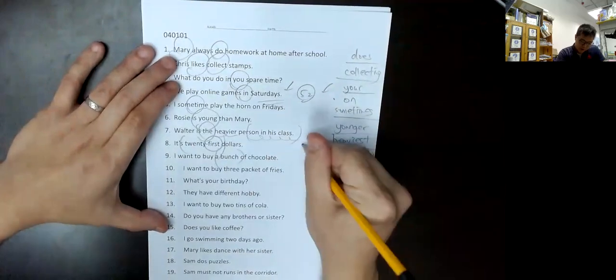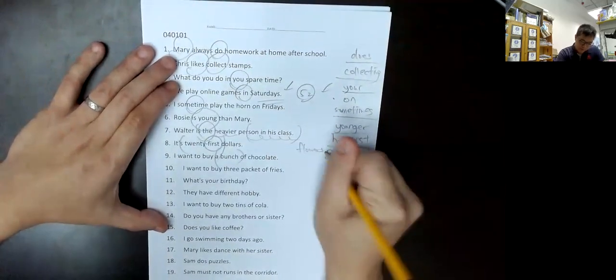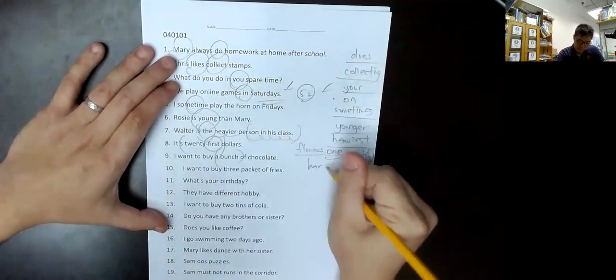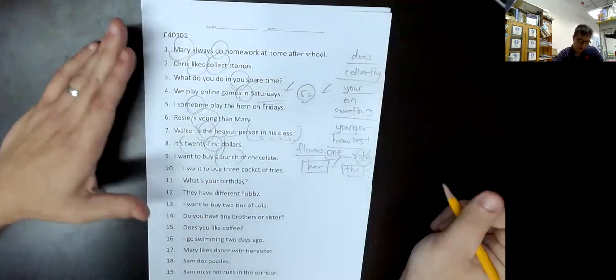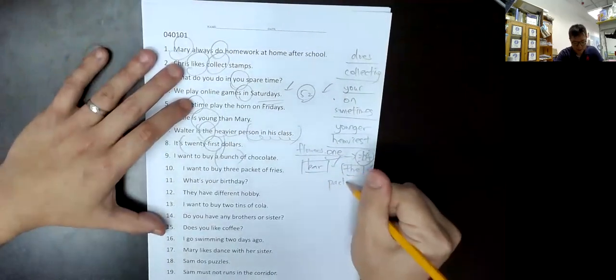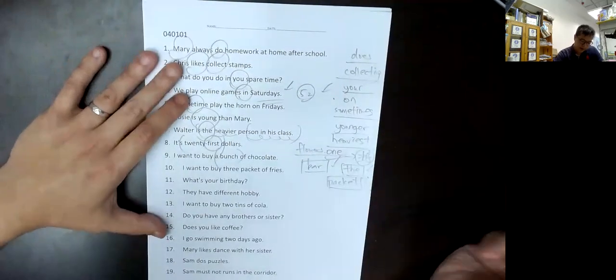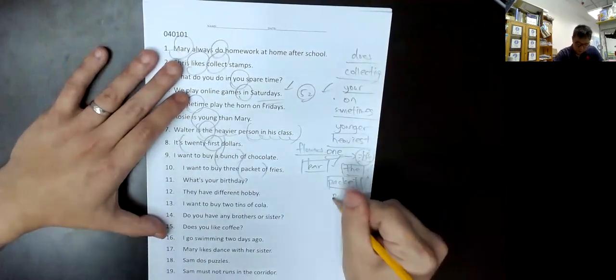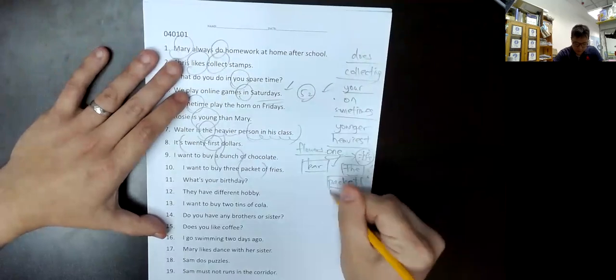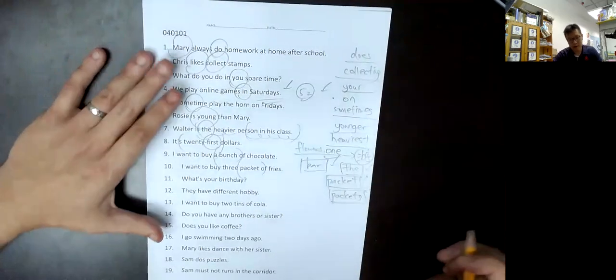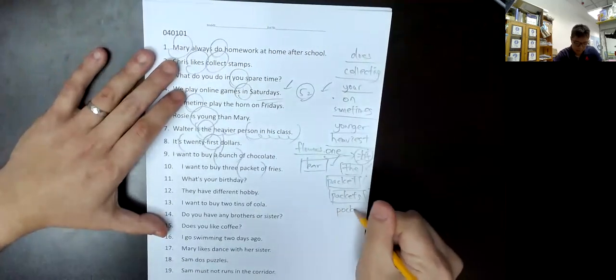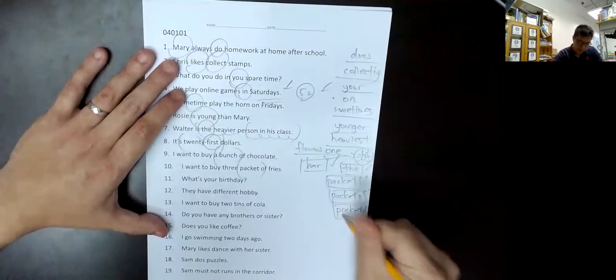And the next section, chocolate is not combined, it goes with flowers. So here you can change. It will usually be a bottle of chocolate, a packet. Packets - don't use pocket, pocket is a trouser pocket, one O one A.